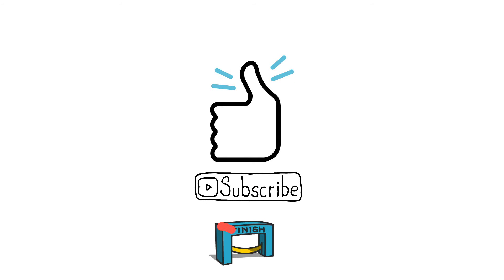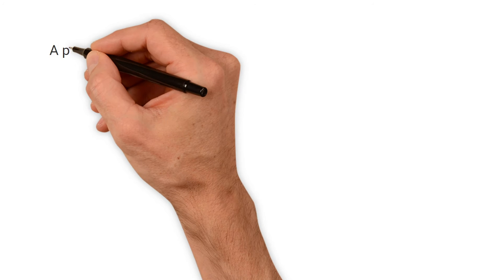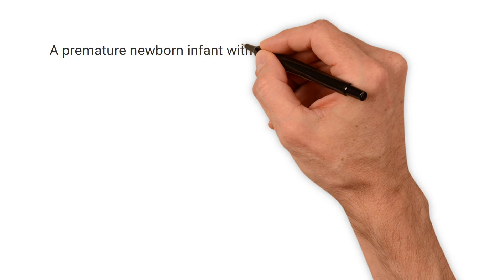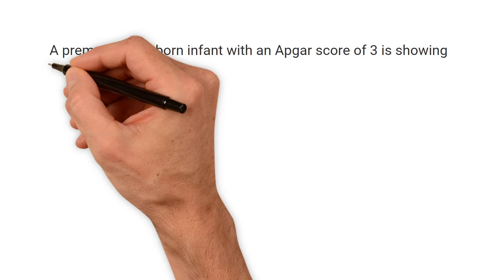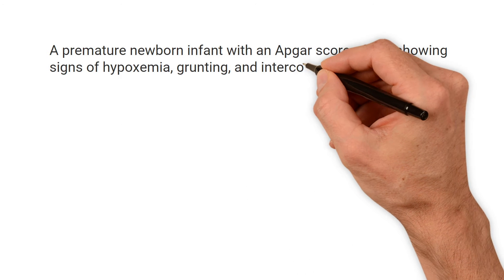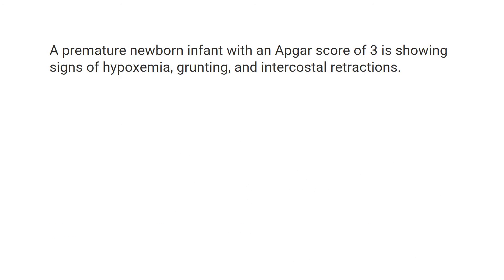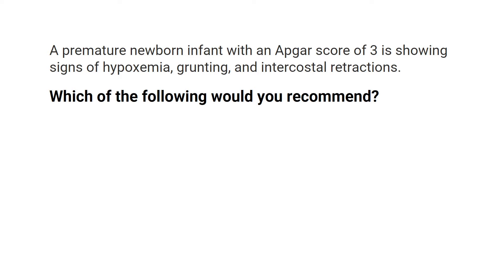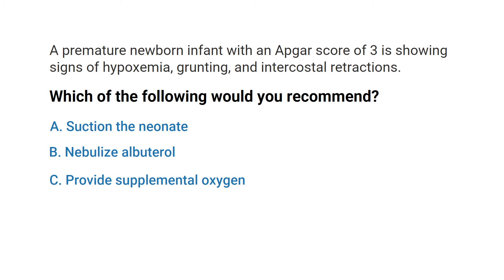Let's break down another practice question. A premature newborn infant with an Apgar score of 3 is showing signs of hypoxemia, grunting, and intercostal retractions. Which of the following would you recommend: A) suction the neonate, B) nebulize albuterol, C) provide supplemental oxygen, or D) instill surfactant into the airway?